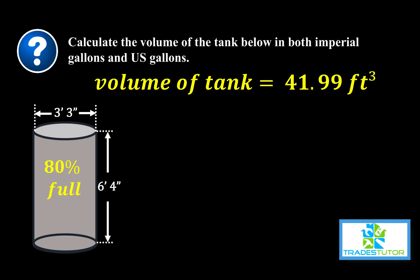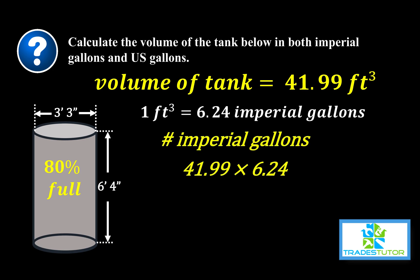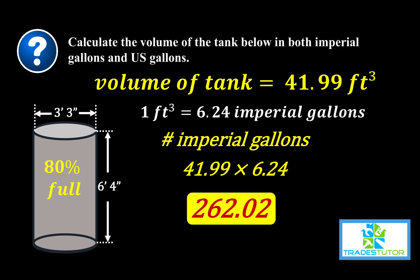After all of that background info, we can figure out how many imperial gallons and U.S. gallons we have. Starting with imperial gallons: we have 41.99 cubic feet times 6.24 imperial gallons per cubic foot, giving us a total of 262.02 imperial gallons in that tank.